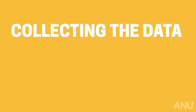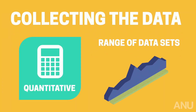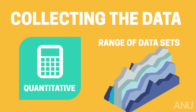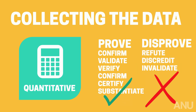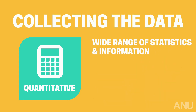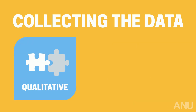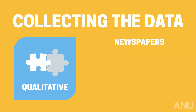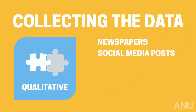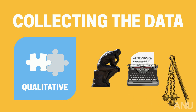Collecting the data: quantitative research typically uses a range of data sets and can even change the data they are collecting if they're not getting sufficient amounts. The goal is to find enough data to prove or disprove your hypothesis, so the data used can be a wide range of statistics and information, as long as it's more concrete. Qualitative research usually uses only one source to collect the data from — this could be newspapers, social media posts, observations, diaries, personal interviews, or even historical artifacts like art, tools, or weapons.